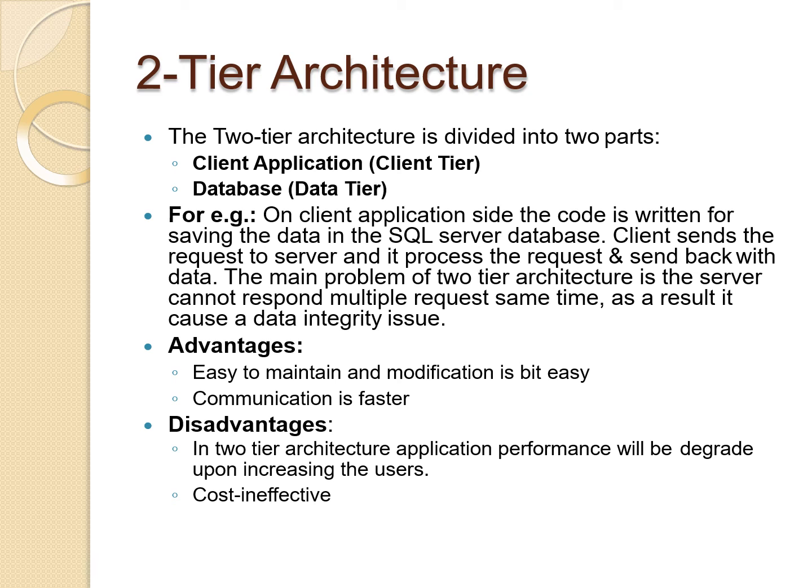Advantages of two-tier architecture: it is easy to maintain and modify, because there is only one server. Communication is fast — a single client has a direct database connection, which means communication is fast.